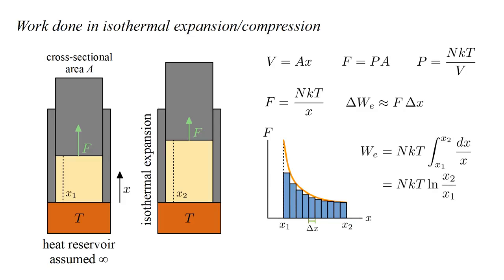The calculation of this area is called integration, and we write that the work done on the environment equals NKT times the integral from X1 to X2 of dX over X. This equals NKT times the natural logarithm of X2 over X1.